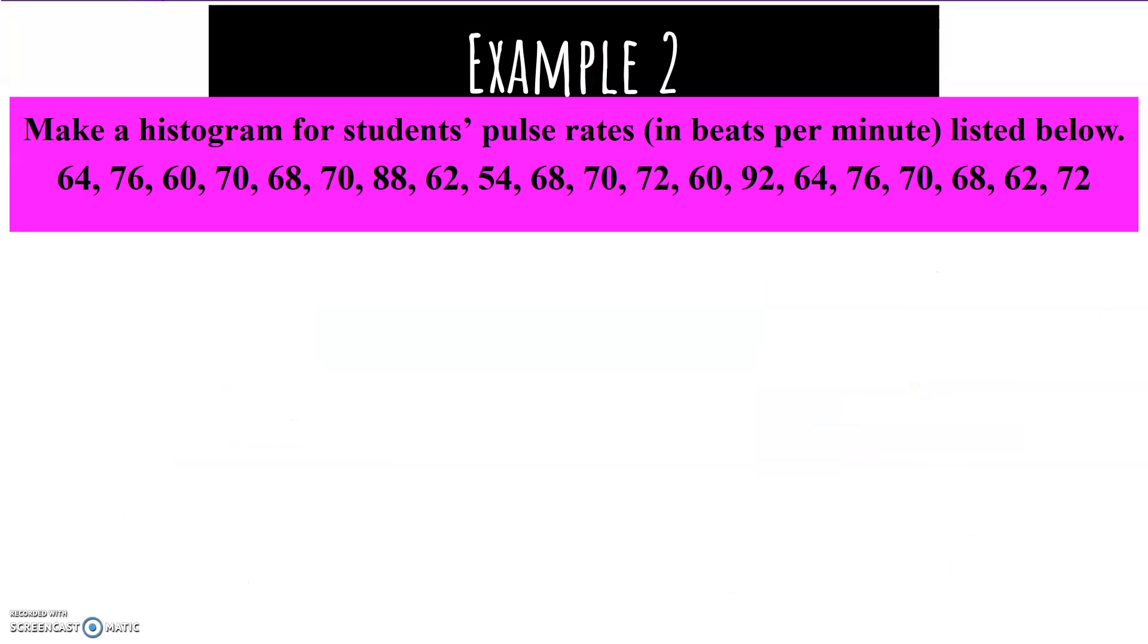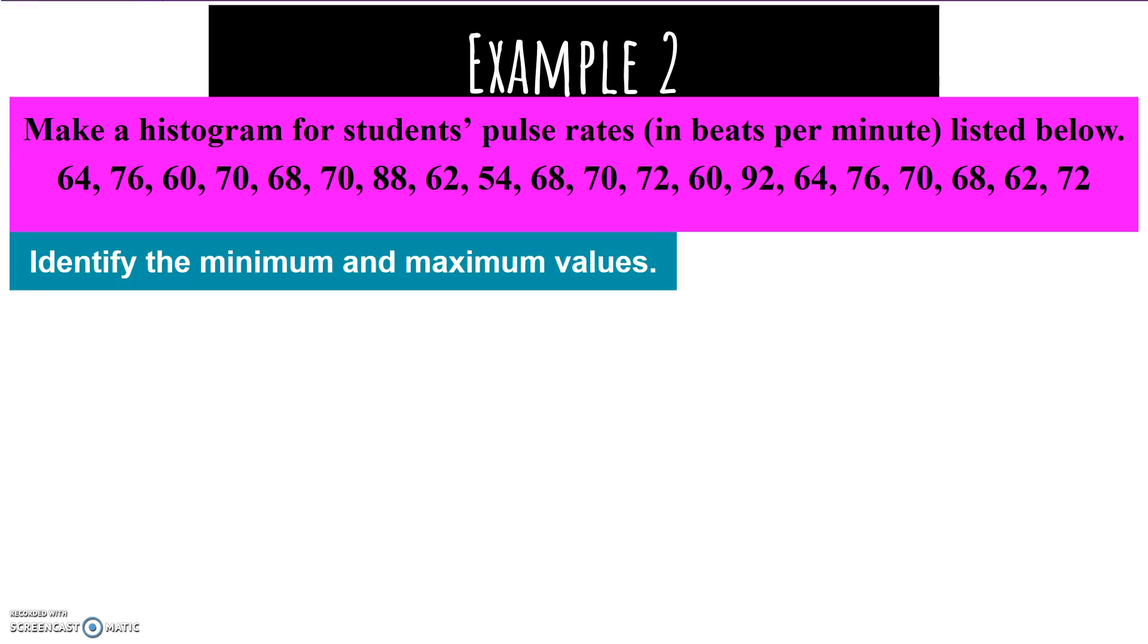Let's look at this set of data. Make a histogram for students' pulse rates in beats per minute listed below. So here we have a set of data. It's not an ordered set, but we do have quite a few numbers here. The first thing we need to do is identify the minimum and maximum values. That's the biggest and smallest numbers.